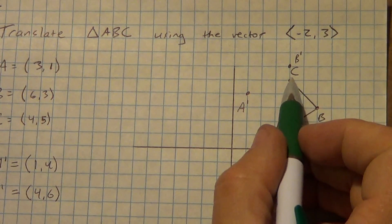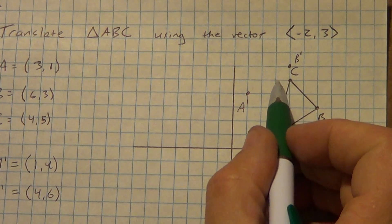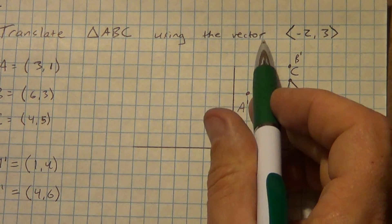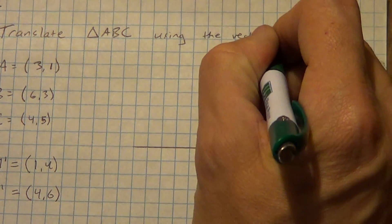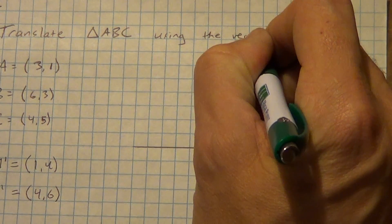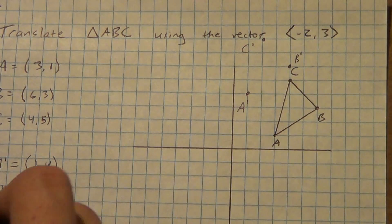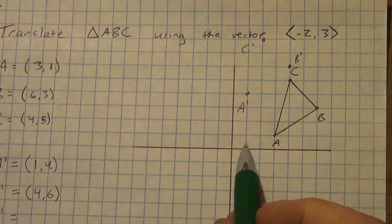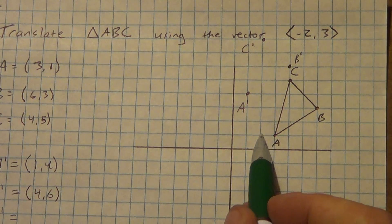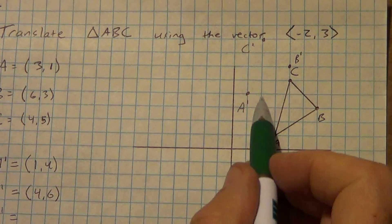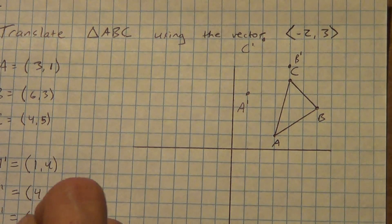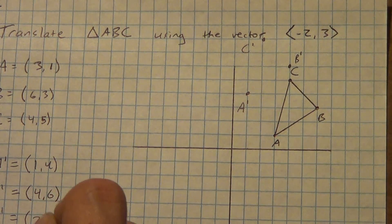Now let's do C. So left 2, up 3. Call that C prime. And that is at (2, 8).